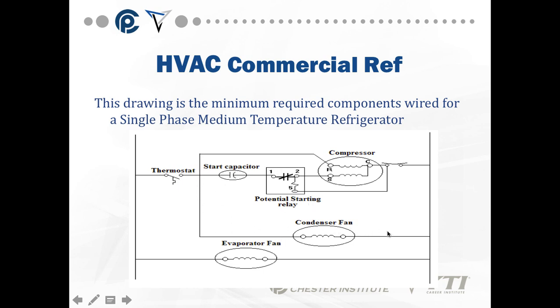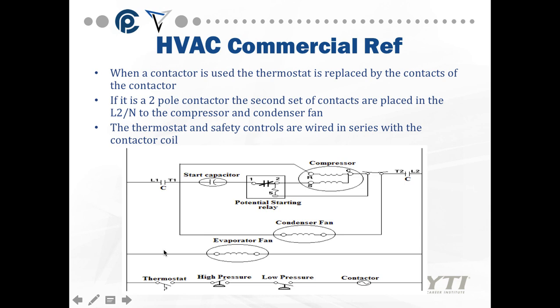At the same time, we energize my condenser fan, evaporator fan — and in a commercial system it runs constantly. When the contactor is used, the thermostat is replaced by the contacts of the contactor. If it has two-pole contacts, the second set of contacts are placed on the L2 neutral to the condenser and the compressor. The thermostat and safety controls are wired in series with the contactor coil. The evaporator fan runs constantly.